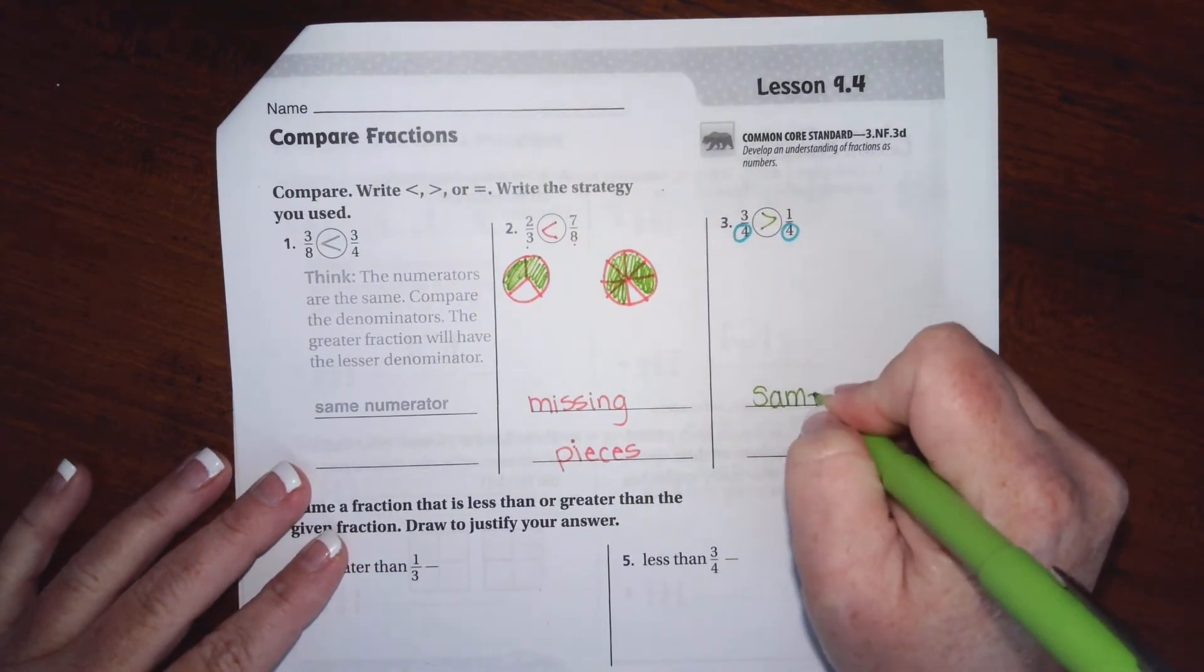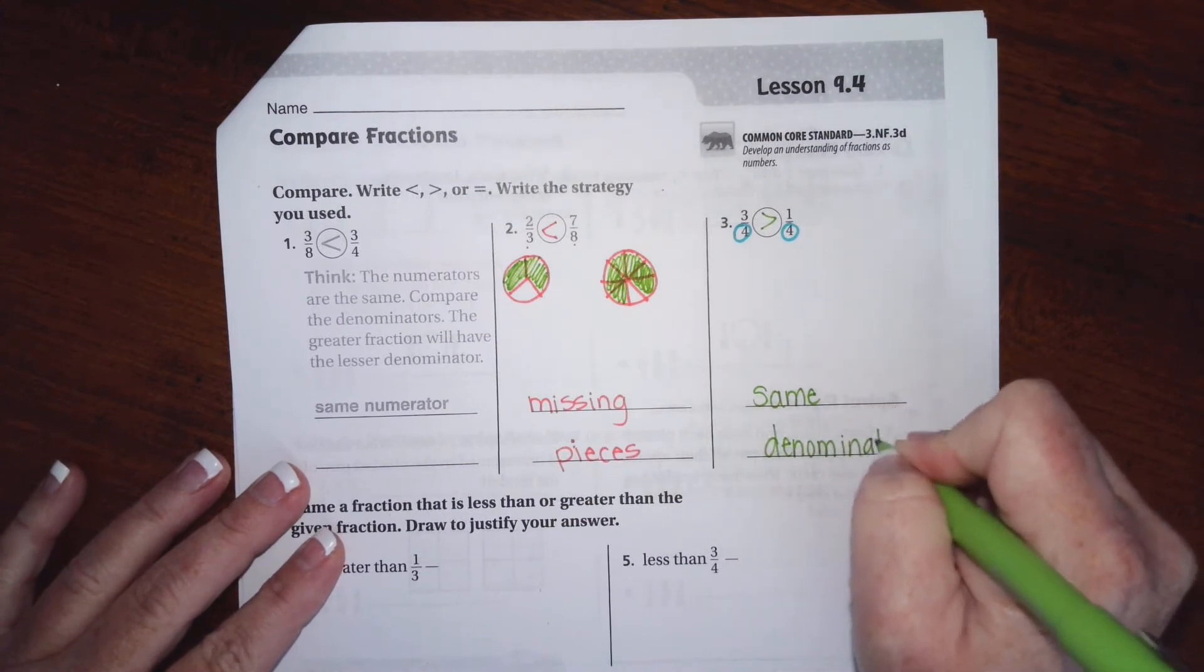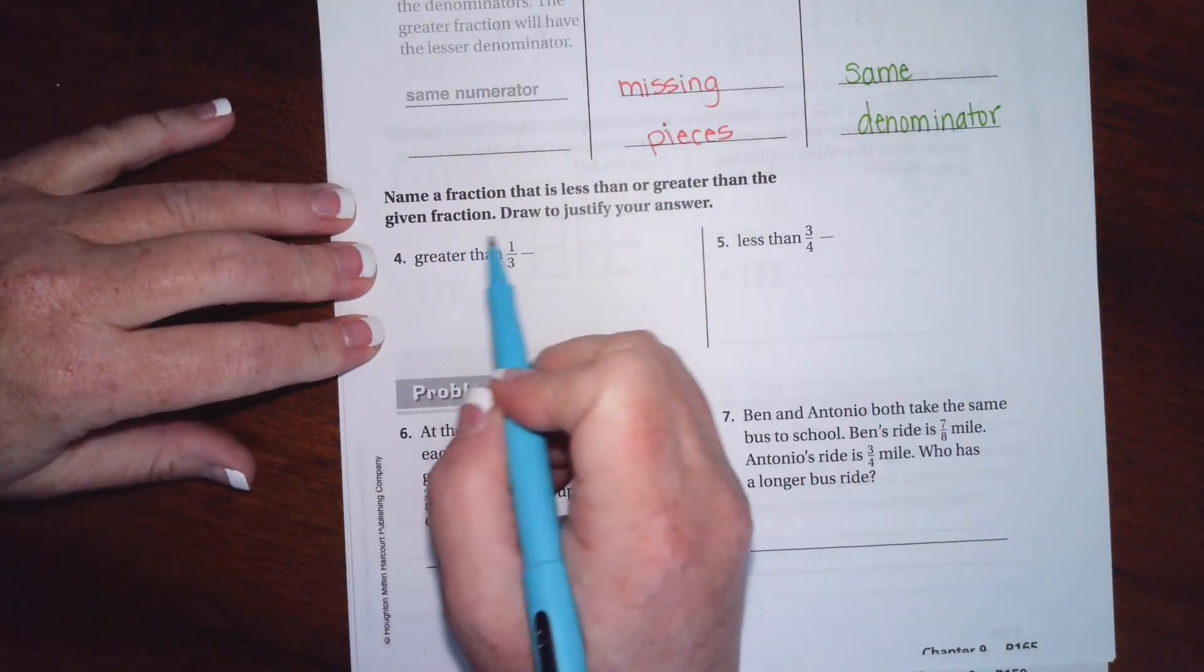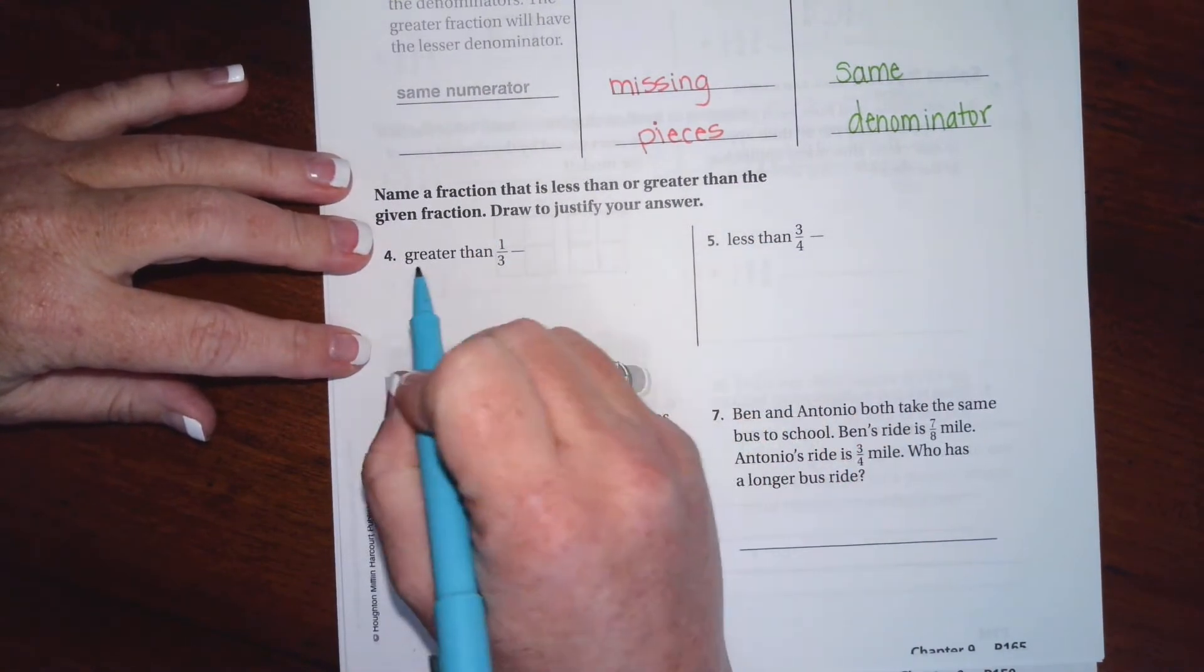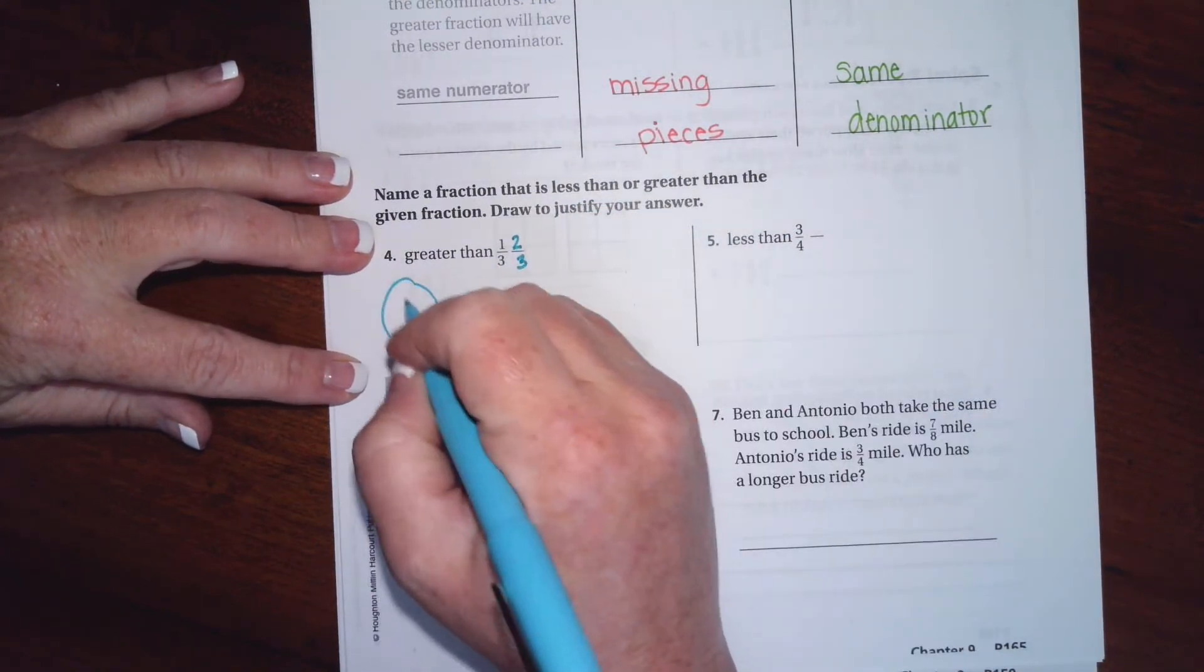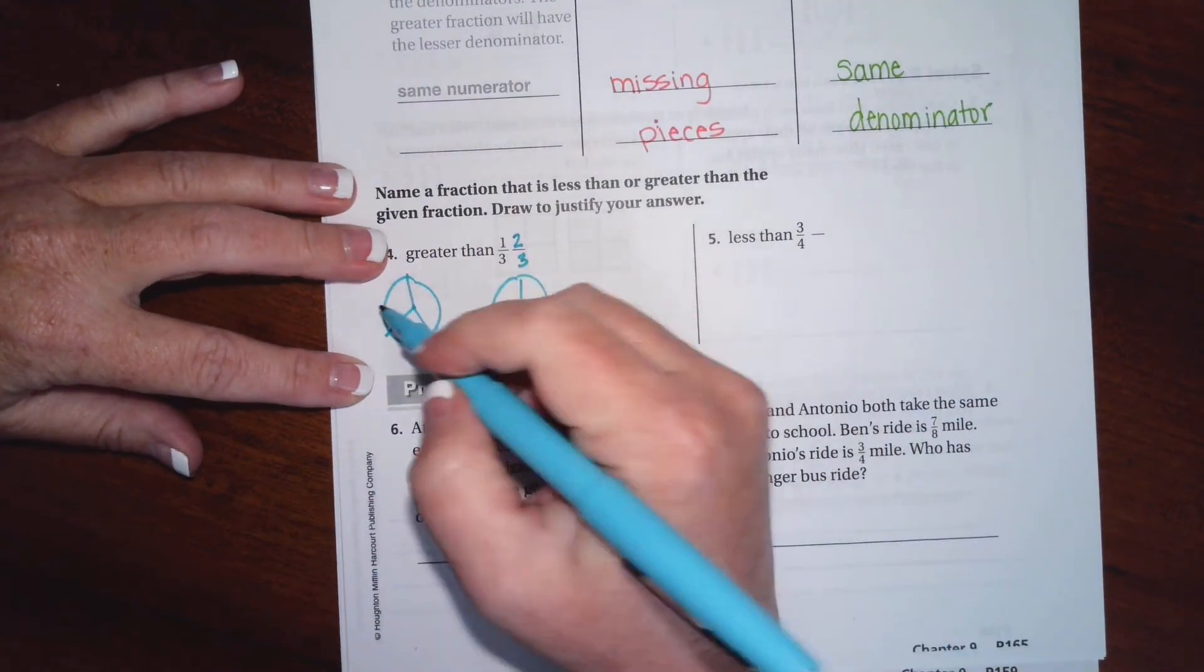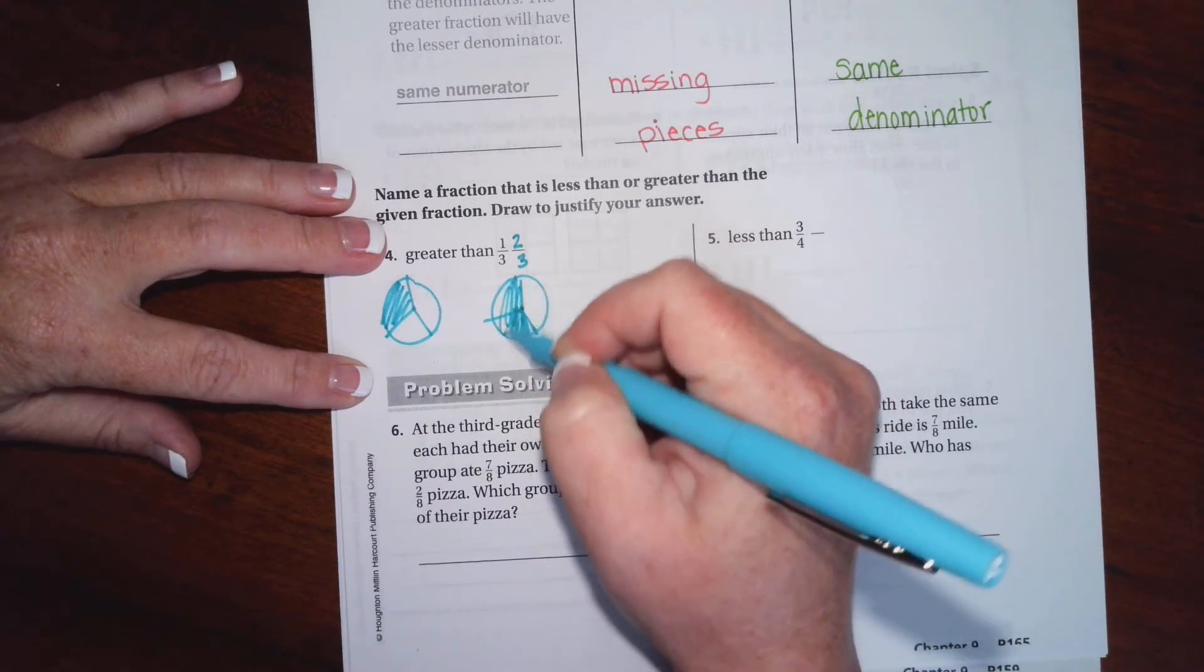Name a fraction that is less than or greater than the given fraction. Draw to justify your answer. For one-third, something that's bigger than one-third would just be two-thirds, that's pretty easy. So break it into thirds. Oh, we totally did that wrong. Pretend that they're in thirds. We're going to color in one-third here, and then we can color in our two-thirds there.